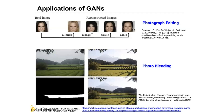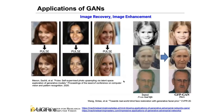Other applications include photo editing: given an original input, we can change the hairstyle, add attributes like a smile, change the gender of the person in the image, or do photo blending — combining two photos into a single composite image that looks very realistic.